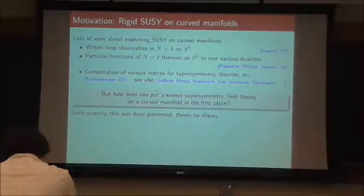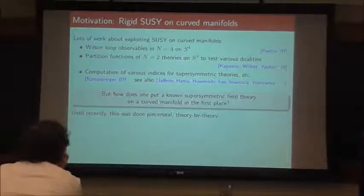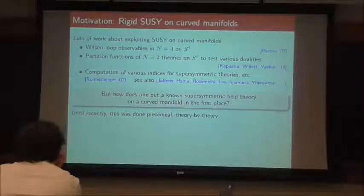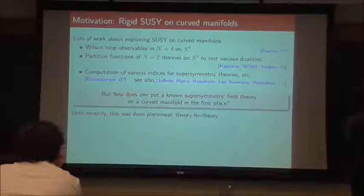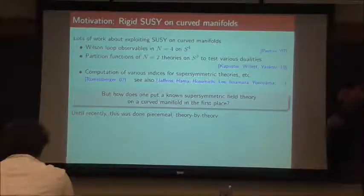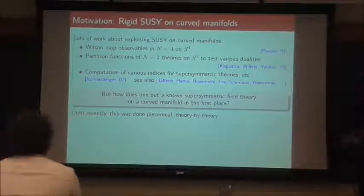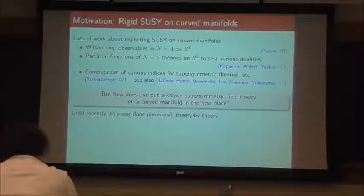But after all this sequence of papers, it was sort of very natural to take a step back and ask a simpler question, which is: how do you even put a known supersymmetric field theory on a curved manifold to begin with? Until recently, this was done piecemeal, theory by theory. If I have, for example, an S^N, it's in a sense straightforward to figure out all of the inverse-radius terms you need to add to your theory and your supersymmetry transformations to actually put it on the curved manifold. But how do you do it in general?